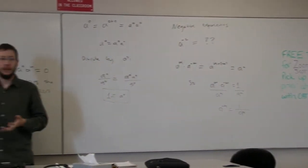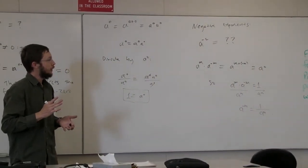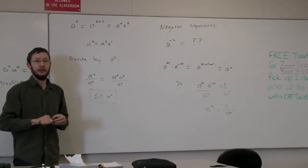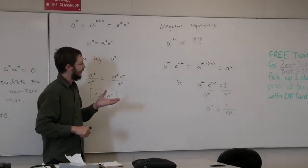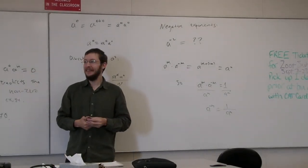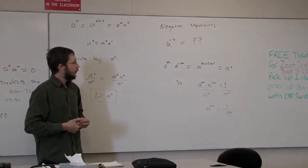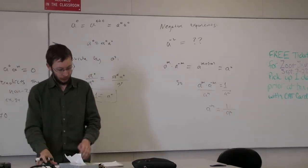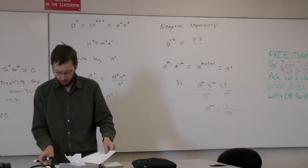So now we've extended the exponent laws not just to zero, but to all negative integers. So far things are pretty straightforward, and I'm sure everyone's fine with these derivations.